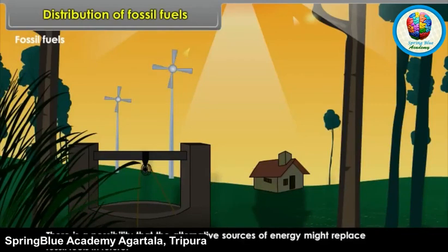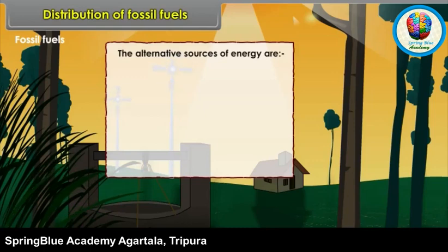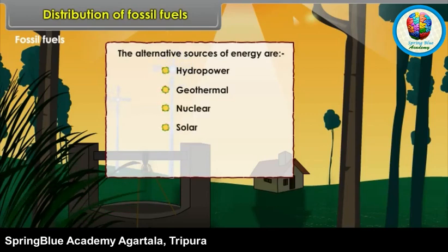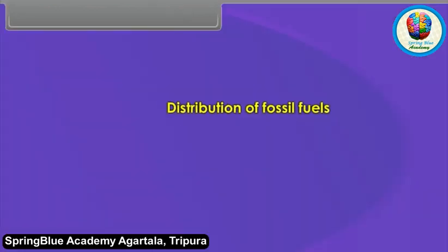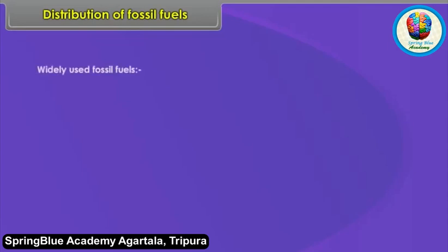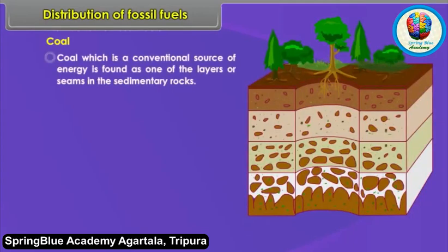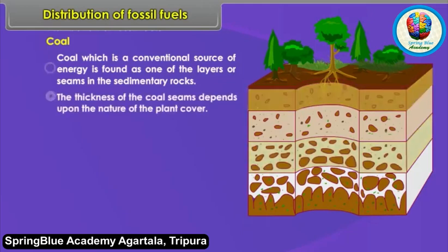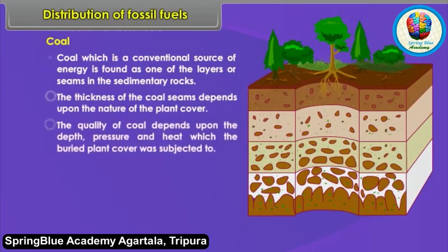There is a possibility that alternative sources of energy might replace fossil fuels in future. These alternative sources are hydropower, geothermal, nuclear, solar and wind power. Coal, which is a conventional source of energy, is found as one of the layers or seams in sedimentary rocks. The thickness of coal seams depends upon the nature of the plant cover, and the quality of coal depends upon the depth, pressure and heat which the buried plant cover was subjected to.